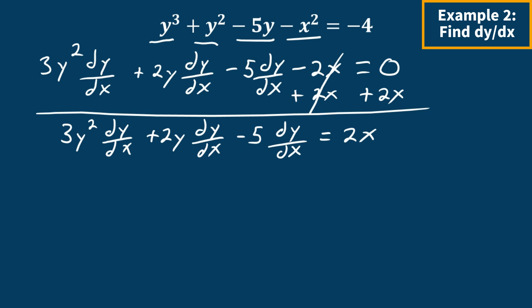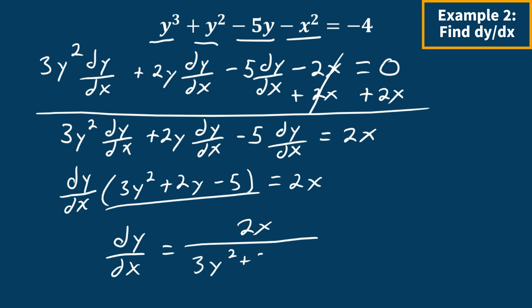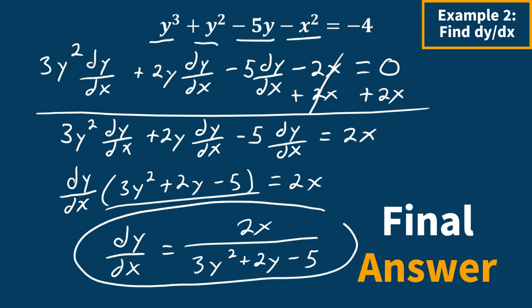Now what I can do is I can factor out a dy dx from those three terms. So factoring out, what we have left is 3y squared plus 2y minus 5 is equal to 2x. Last thing we have to do is divide this term here to both sides. When we do that, what we get is dy dx is equal to 2x divided by 3y squared plus 2y minus 5. And this is going to be our final answer.